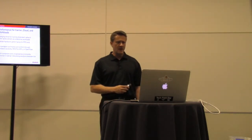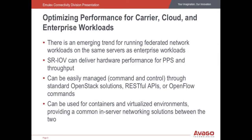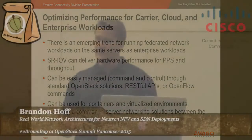In conclusion, we're working with customers to optimize performance so people can deploy their software-defined data center, deploy software to accelerate different applications, and get better TCO and cost savings when they deploy their servers. There's an emerging trend for running federated network workloads alongside enterprise workloads. These are going to be orchestrated and managed from things like OpenStack and Neutron. SR-IOV provides the performance and packets per second that network workloads really need — millions of packets per second and 10 or 40 gig or more bandwidth. You can manage these through standard OpenStack tools like Neutron and ML2, or through our RESTful API or OpenFlow interface.